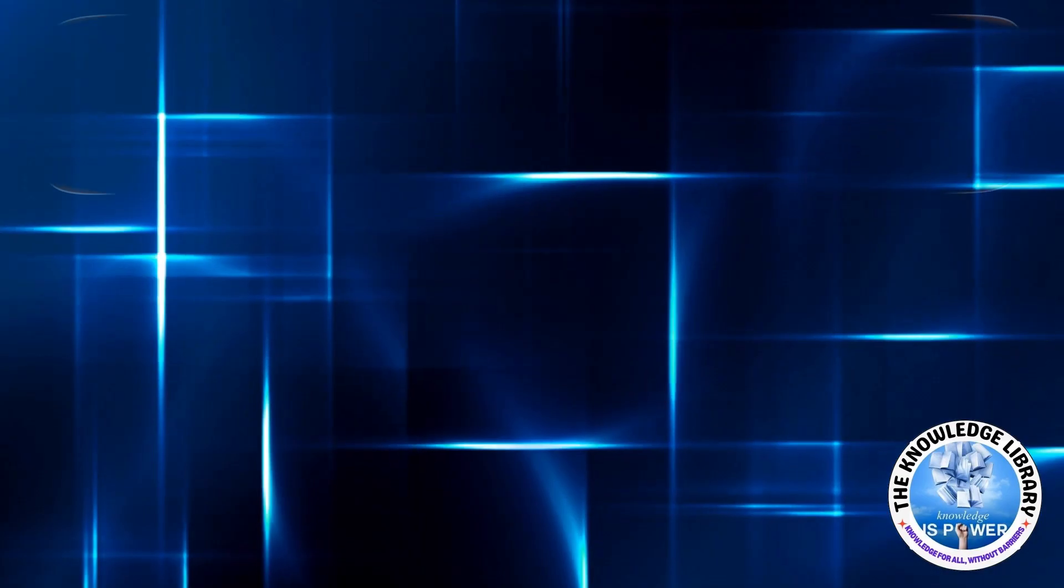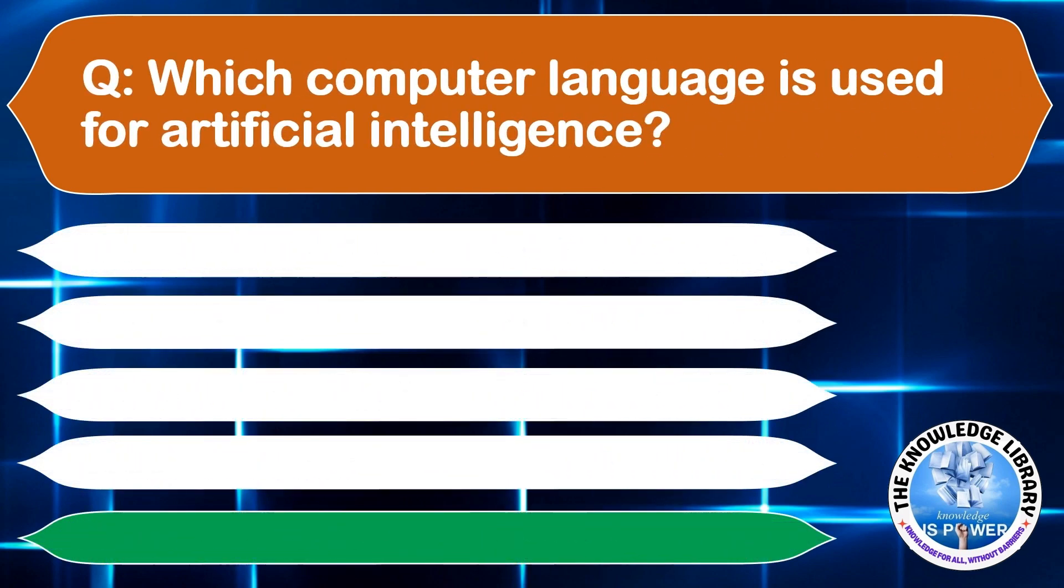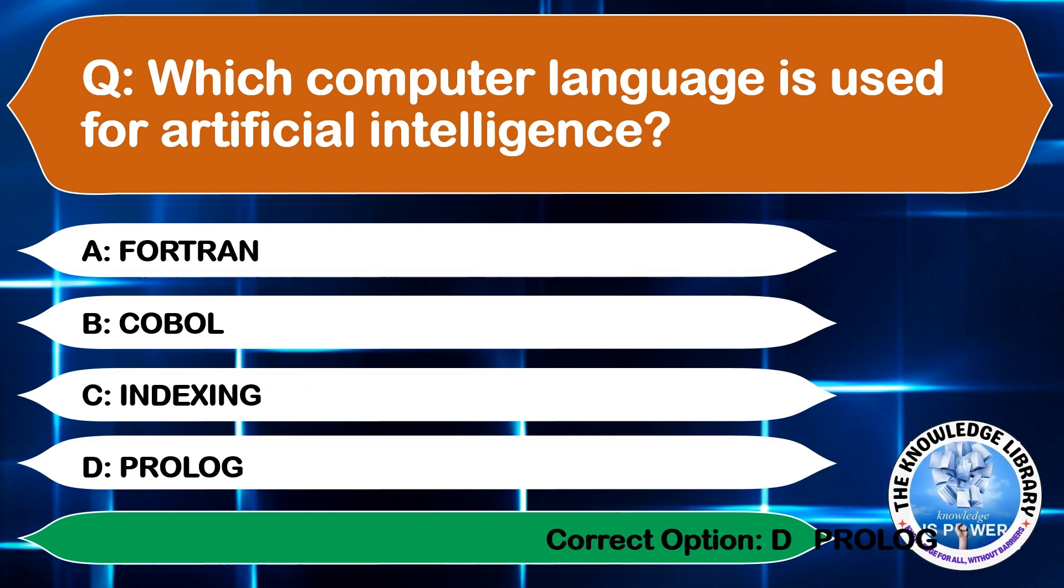Which computer language is used for artificial intelligence? A: Fortran, B: Cobol, C: Indexing, D: Prolog. The correct answer is option D, Prolog.